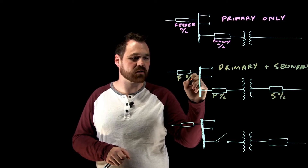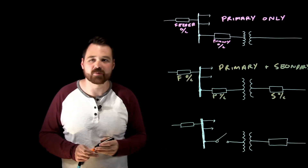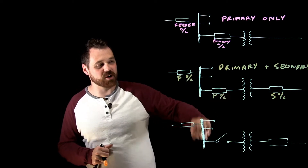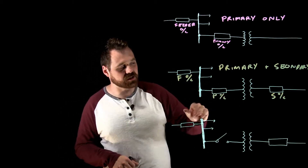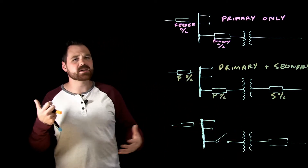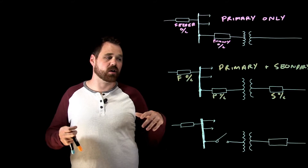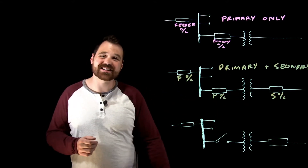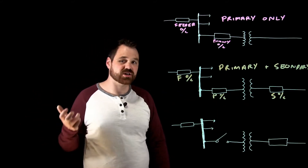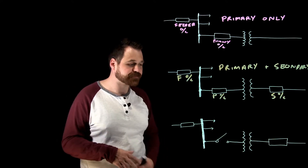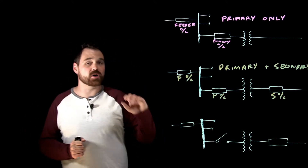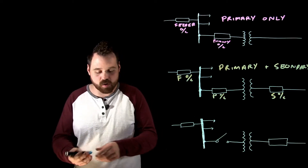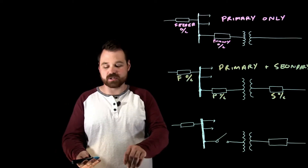I also have my feeder overcurrent protection over here. This one's a little bit overkill because, as we discussed, the primary will protect the primary and the secondary. But some specs for different jobs or certain applications may require that secondary overcurrent protection as well. The middle option is not too common, but the code book does give us the requirements in order to size that.